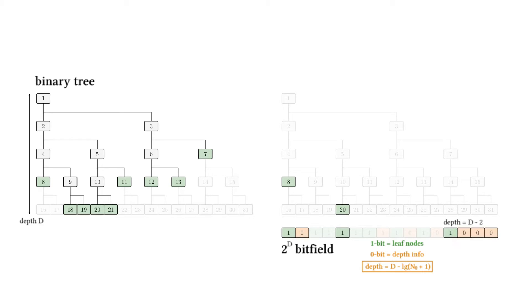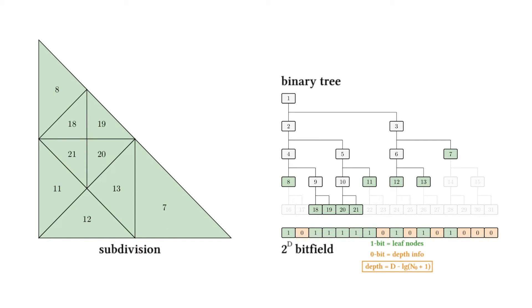Finally, this green bit is followed by three zeros, and therefore encodes the node above it that has depth d minus 2, which is leaf node 7. Under this logic, the bit field provides a way to retrieve all the leaf nodes of the binary tree, and hence the triangles produced by the subdivision.